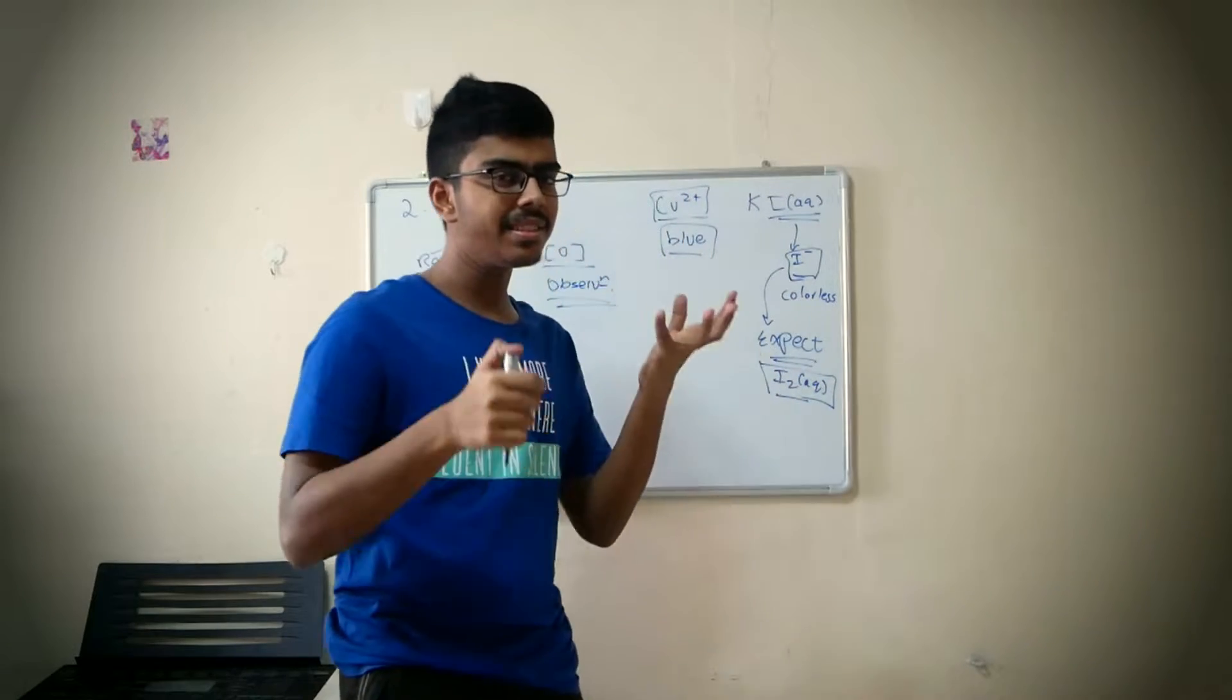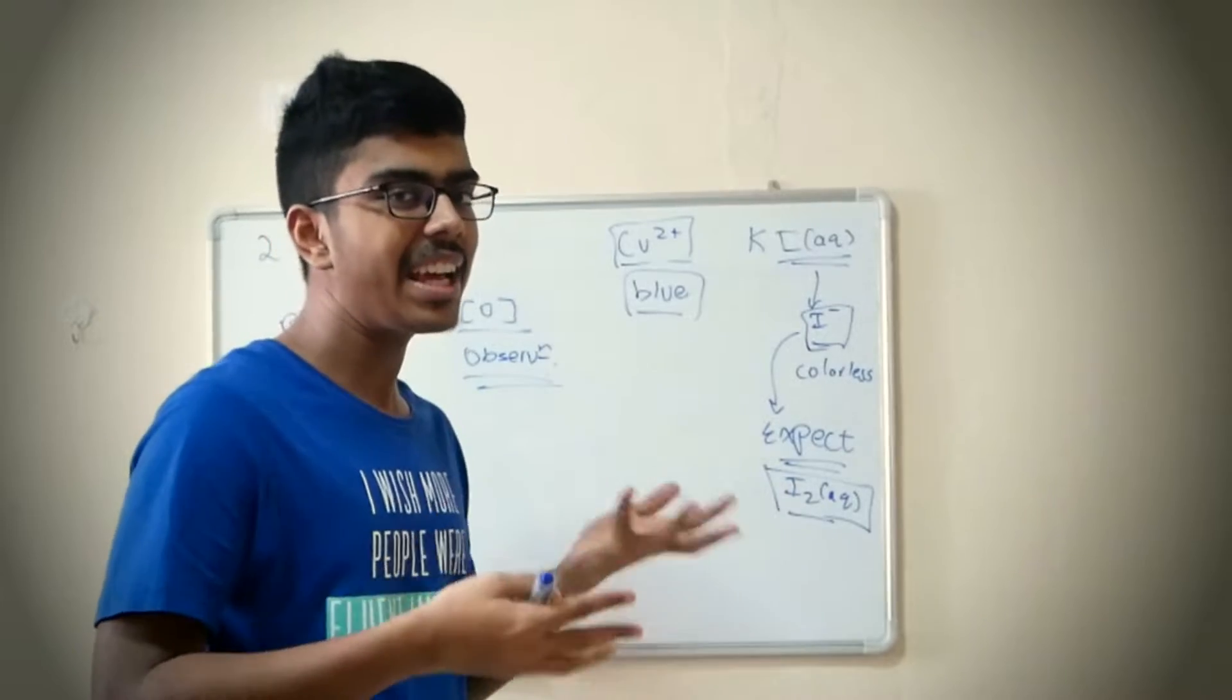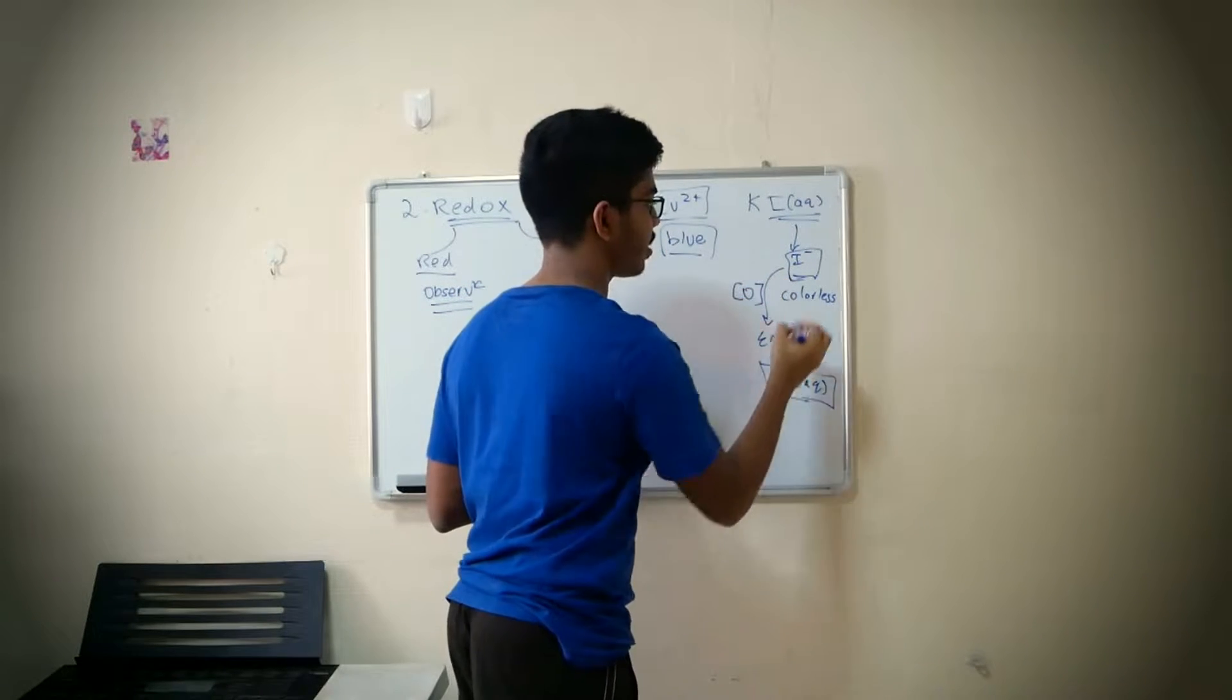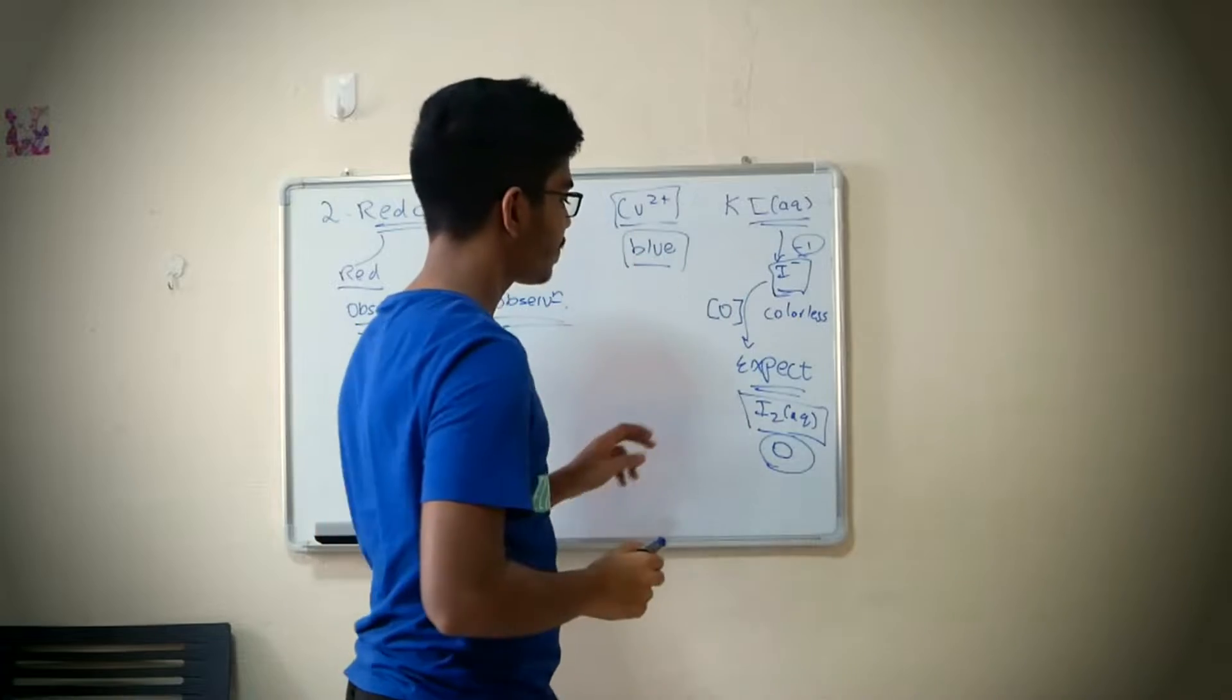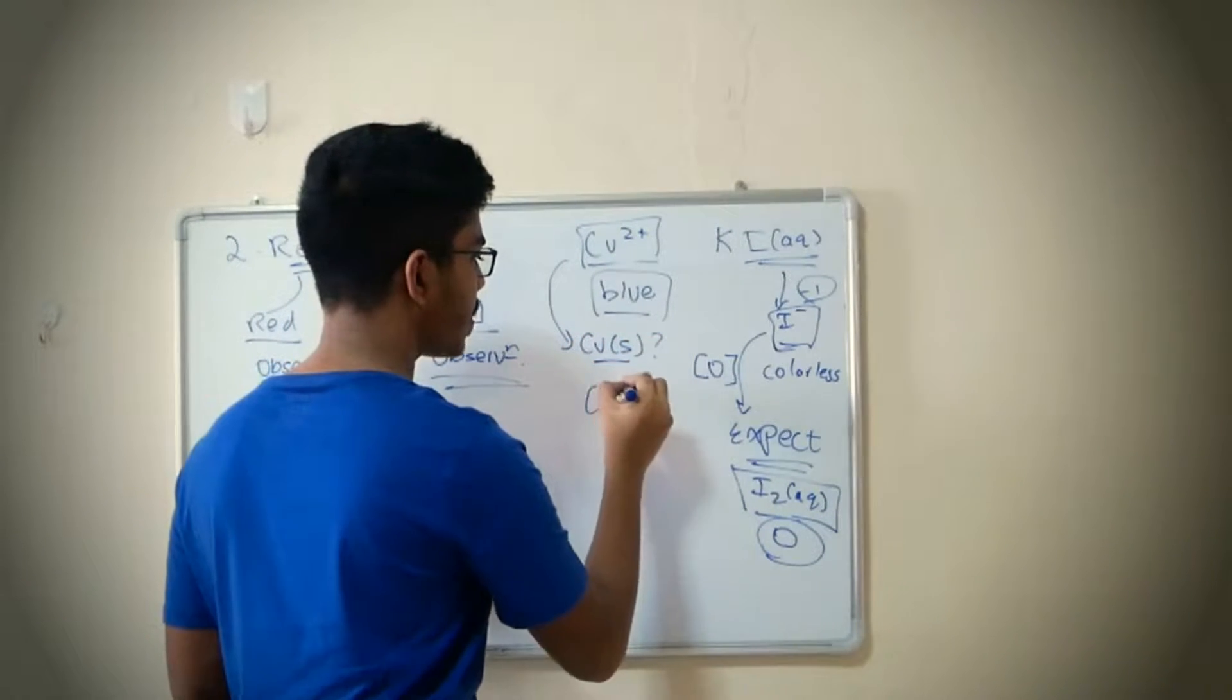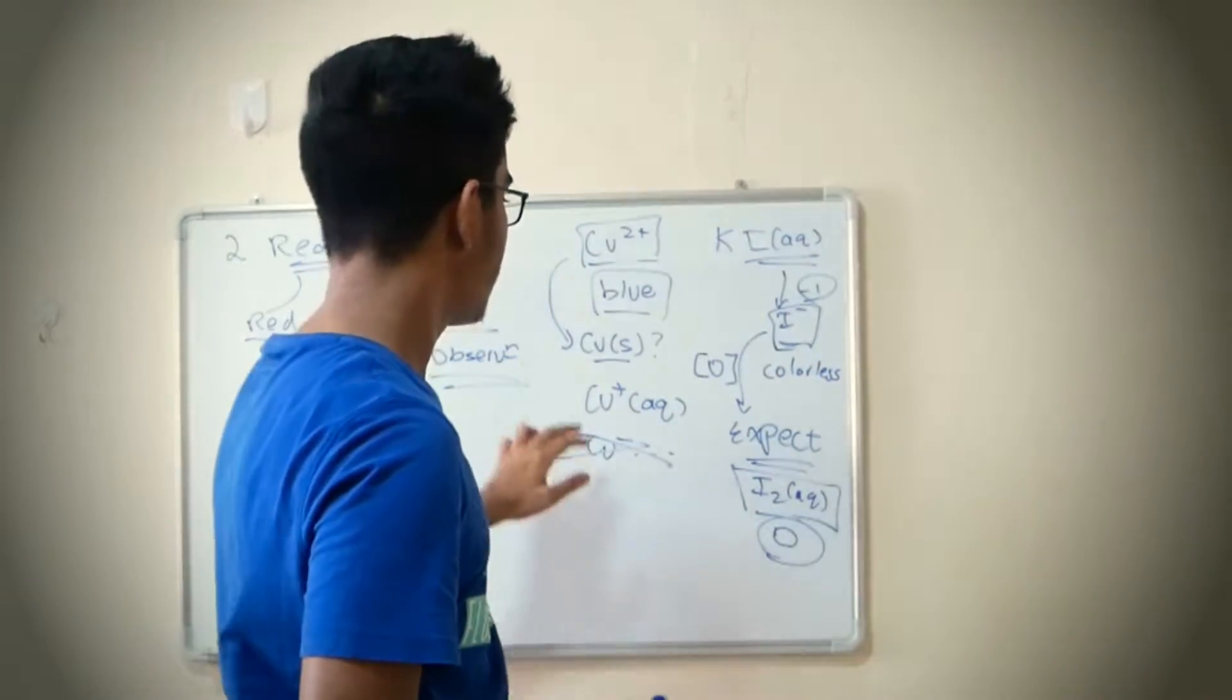Now this and this react. The natural tendency is you look at I-, you look at CO2+, there has to be some redox reaction. You're expecting I2 aqueous. What else could it form? Could it form iodine as a solid? That's really rare. It still has to be I2 aqueous. It's kind of like elimination.